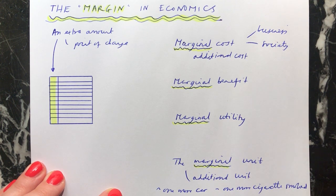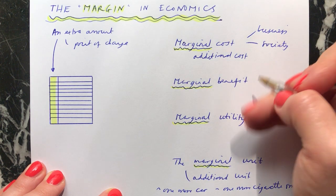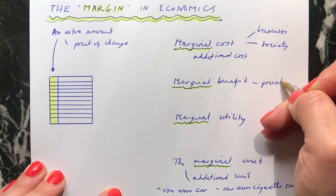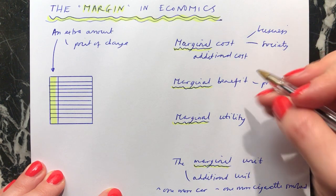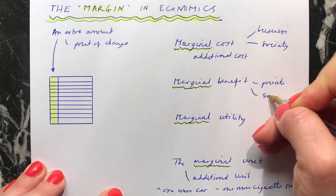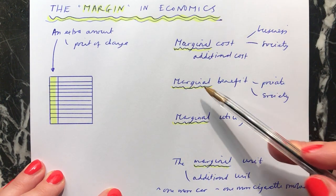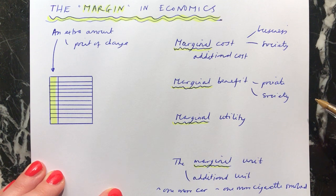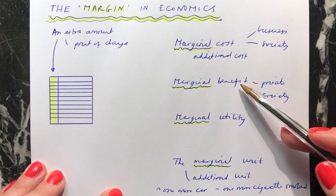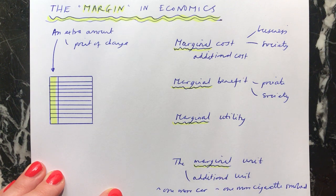You can also look at the marginal benefit of something. For instance, if one extra person or 10 extra people go to university, that will have a benefit to them — this could be a private benefit to the individual. You'll also have the marginal social benefit, which would be the benefit to society. It's the marginal benefit because it's where an extra person or people go to university, and it's looking at what the benefit is for the entity you're examining for those extra people going to university. It's just looking at the benefit from an extra amount of something being consumed or produced.